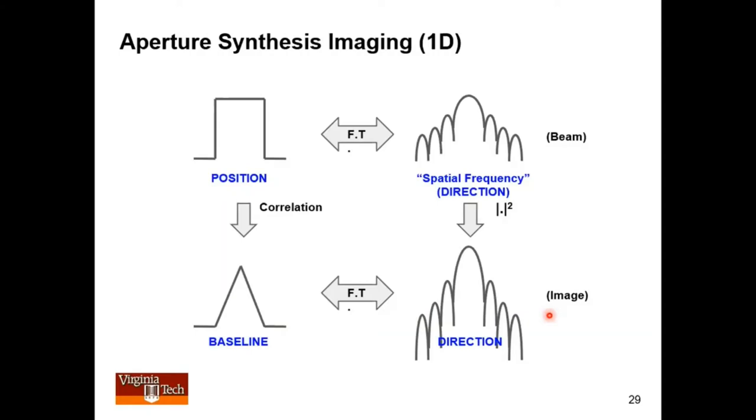And if I take the Fourier transform of that, I get an image. So it turns out that for a whole bunch of reasons, this is the hard way to go, and this is the easy way to go. In fact, if you sparsely populate or you sparsely sample a large aperture, you really have to go this way. It becomes intractable to go the other way.